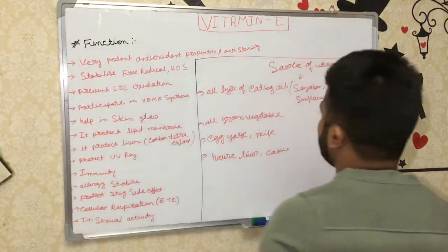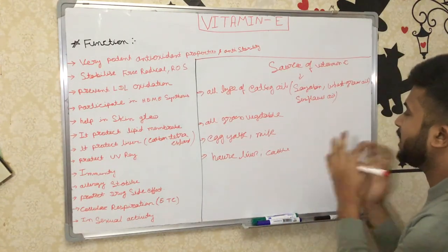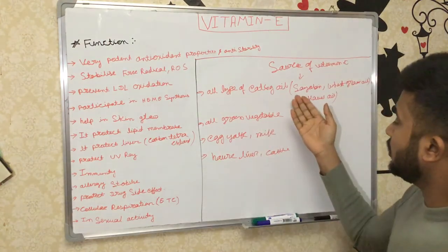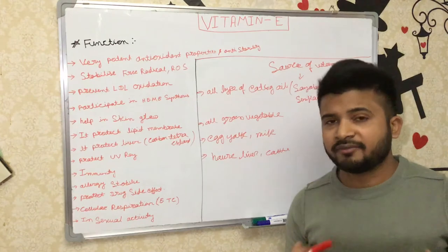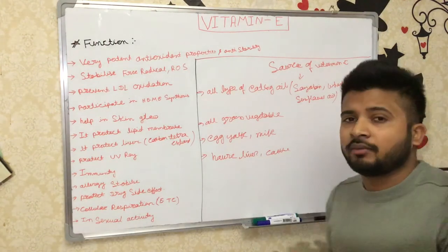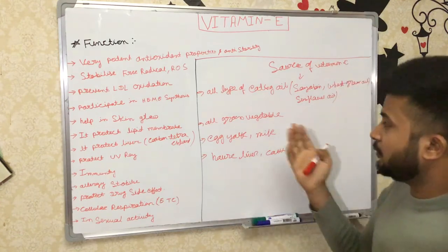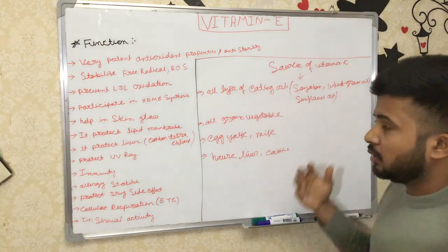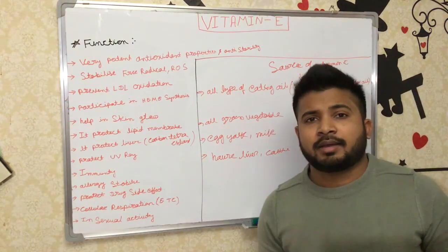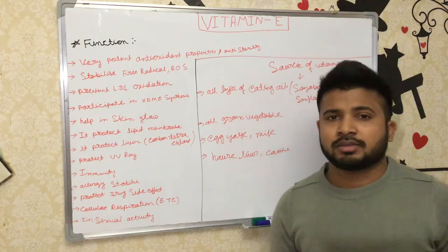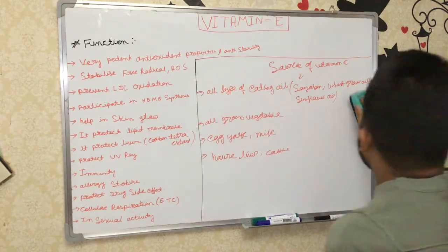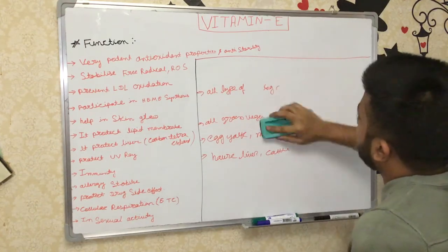The major sources we normally take are oils, green vegetables, yogurt, and similar foods. Since we eat these foods every day — you cannot cook food without oil — Vitamin E is already being taken daily. That is why deficiency of Vitamin E is very, very rare. Without green vegetables and oil, we cannot prepare food, so Vitamin E is not a major deficiency problem.